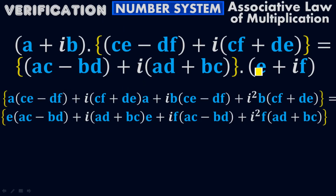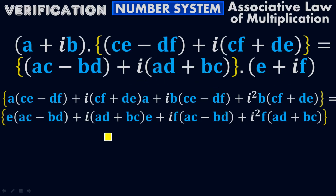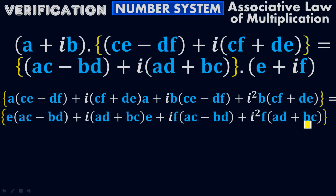For the right side, take the product of (AC − BD + i(AD + BC)) with (E + iF). E times (AC − BD) gives E(AC − BD). E times i(AD + BC) gives iE(AD + BC). Then iF times (AC − BD) gives iF(AC − BD). And iF times i(AD + BC) gives i²F(AD + BC).